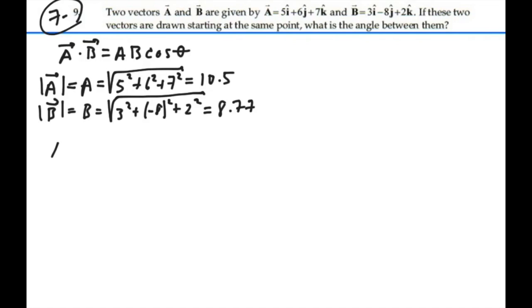Okay, so the dot product as we've drawn it then is equal to ten-point-five times eight-point-seven-seven times the cosine of the angle between the two vectors. Ten-point-five times eight-point-seven-seven is ninety-two-point-one. So we have ninety-two-point-one cosine theta. All right, so far, so good.